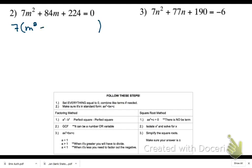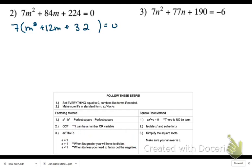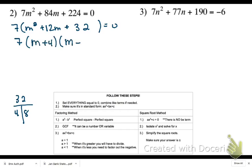After factoring out the seven, I'm left with m squared plus 12m plus 32 equals zero. Now my a value inside the trinomial is one — I got there by factoring out that seven, so I never have to multiply and divide. I'm going to multiply a times c: one times 32 gives me 32. I want two numbers that multiply to positive 32 and add to 12 — that's 4 and 8. So the factored form is 7(m + 4)(m + 8).